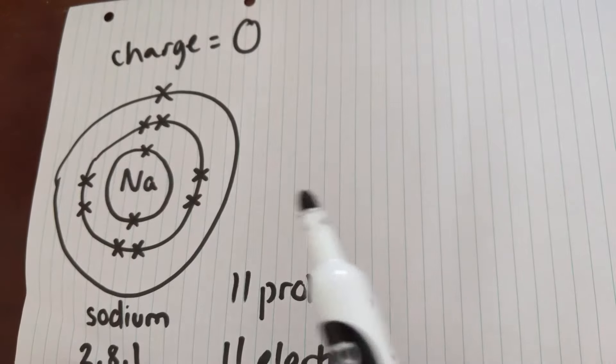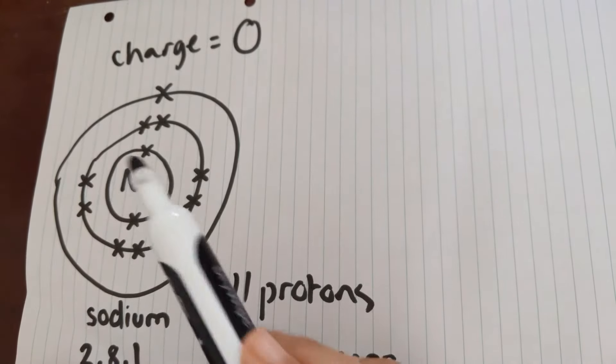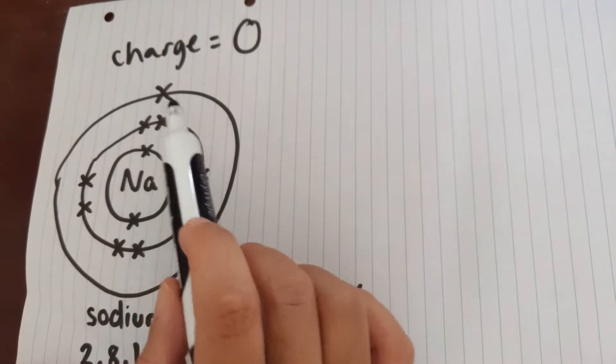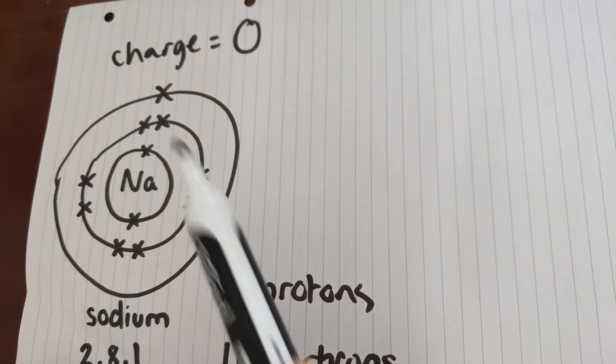So when atoms turn into ions, what they tend to do is something called electron transfer, which is that they use their free electrons that aren't very well held within the nucleus because the